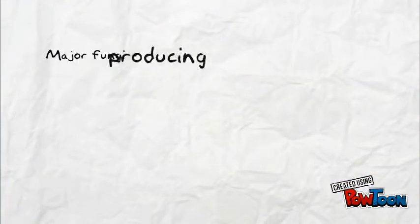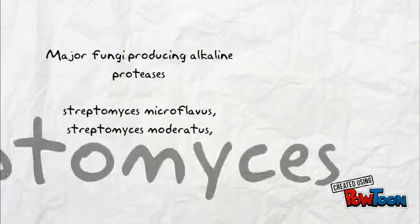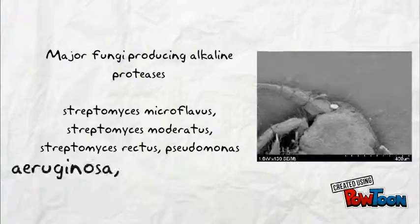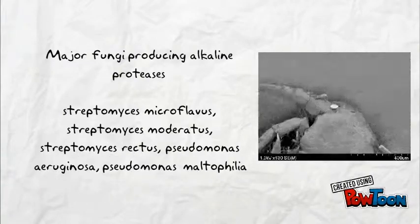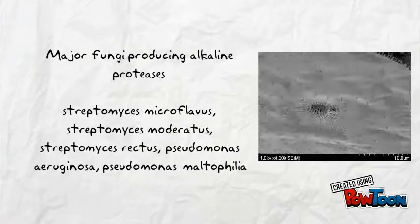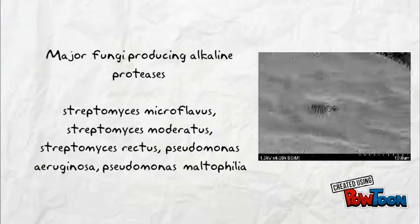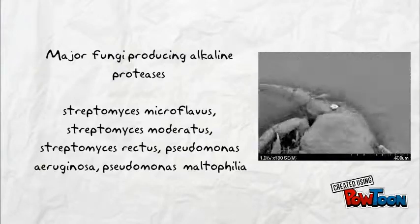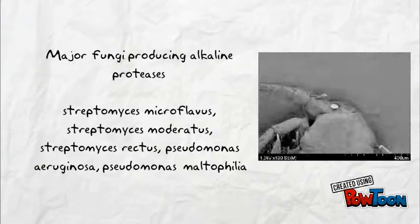Major bacteria producing alkaline proteases include Streptomyces microflavus, Streptomyces moderatus, Streptomyces rectus, and Pseudomonas aeruginosa.